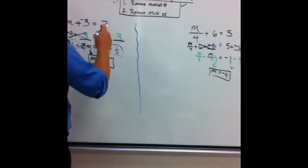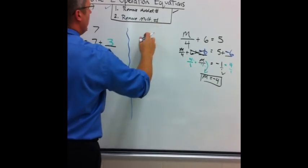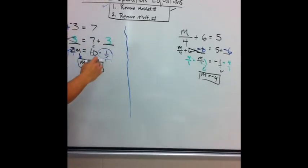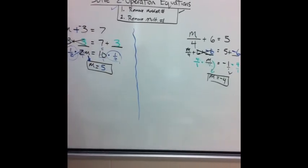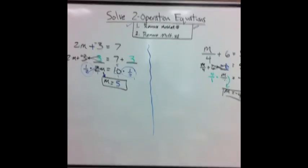This is a two-operation equation. Remember, I must get rid of the added number first, then get rid of the multiplied number. Add the opposite, multiply by reciprocal. Add the opposite, multiply by the reciprocal. That's it.